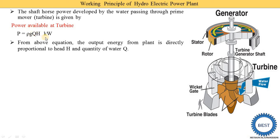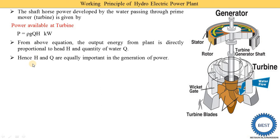h depends on the rainy season and how much water is stored in the dam. If more water is stored in the dam, h is increased, and if h is increased, then the power available at the turbine is increased. Q is the quantity — how much water is supplied to the turbine. If more height is there and more Q is there, then more power is produced. Hence, h and Q are equally important in the generation of power.